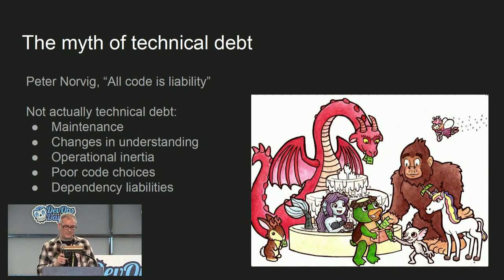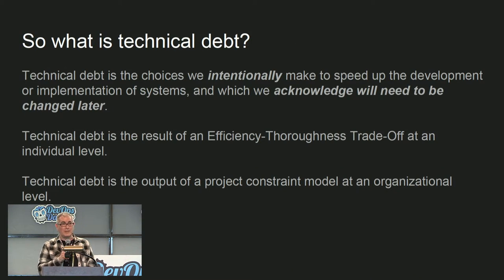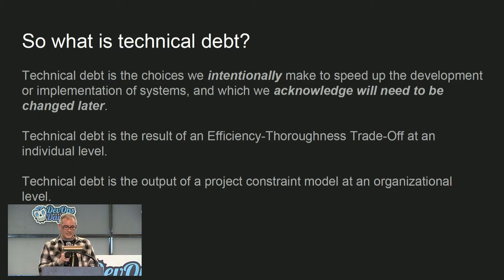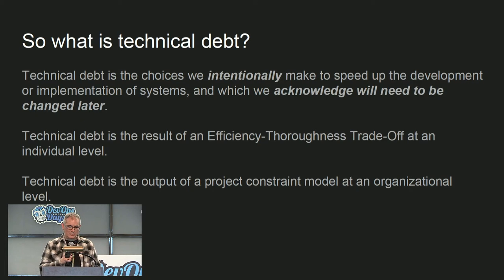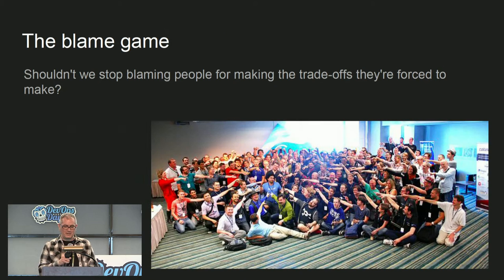In the process, I think we end up including many things under the umbrella of technical debt which aren't actually technical debt. Every system or platform that we manage has to be maintained, and we have to understand how it's evolving and changing. So what is technical debt? I'd like to qualify it as something that's intentional — something that we acknowledge we'll need to change later. At an individual level, it's an efficiency-thoroughness trade-off, and at a business level, it's things like speed and cost.